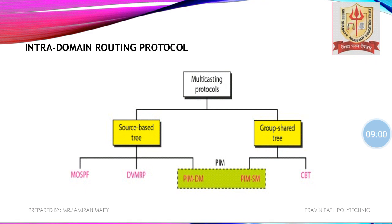In intra-domain routing, multicast protocols have two types of trees: source-based tree and group shared tree. Source-based trees, as seen earlier, involve pruning routers not related to receivers or those using longer paths. Examples of source-based tree protocols are MOSPF and DVMRP, which we have already covered. Next are PIM-DM (dense mode) and PIM-SM (sparse mode), where sparse mode is part of the group shared tree.